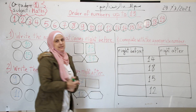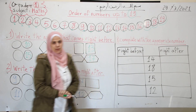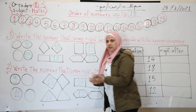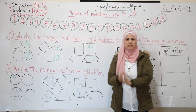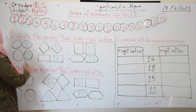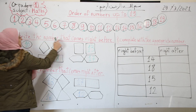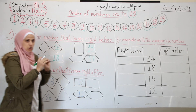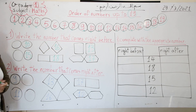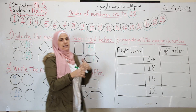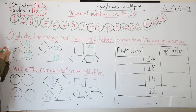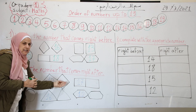Today we learn how to order numbers up to 19. We want to learn new expressions: 'right before' and 'right after.' Right before means we look for the number that comes before, and right after means the number that comes after.